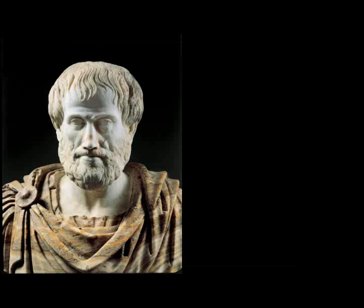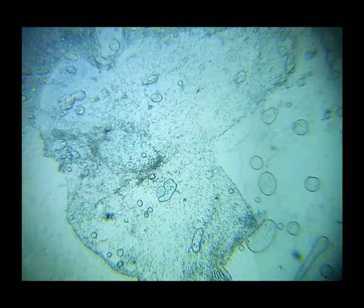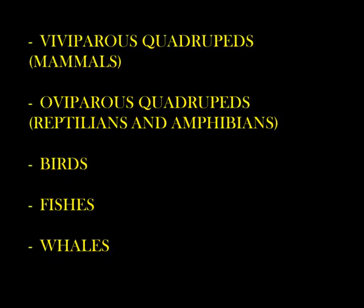He was the first to separate animals into groups. The first division was between animals with blood and without blood — meaning without red blood — which is compared with the division between vertebrates and invertebrates. He separated the blooded animals into five groups: viviparous quadrupeds (mammals), oviparous quadrupeds (reptilians and amphibians), birds, fishes, and whales.